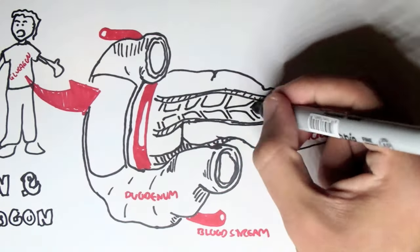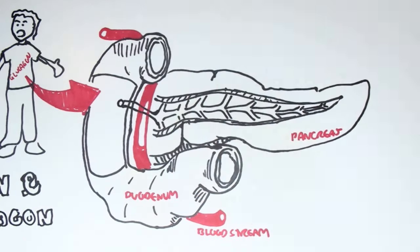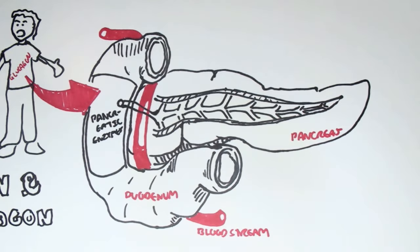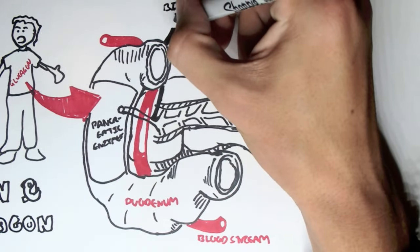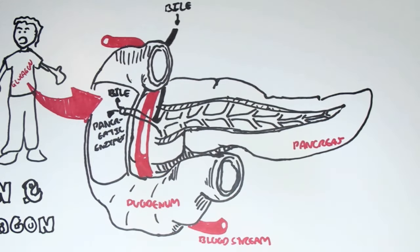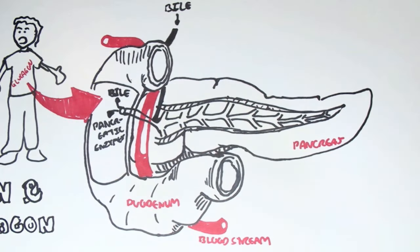The pancreas has many roles. One of its main roles is that it secretes digestive enzymes, which initiates digestion. And it does this by secreting it through the pancreatic duct into the duodenum. Another duct that attaches to the pancreatic duct is the bile duct, where a bile comes from. And bile is also secreted in the duodenum. Another role the pancreas has, the main role that we're looking at, is that the pancreas also secretes two hormones, insulin and glucagon, into the bloodstream.